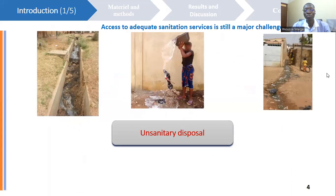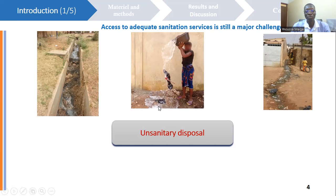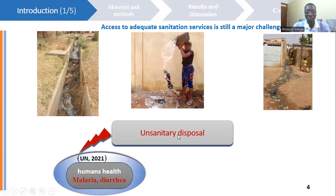As an introduction, in middle and low income countries, access to adequate sanitation services is still a major challenge, despite all the efforts made so far. Indeed, wastewater is most often discharged untreated onto the ground and into open stormwater drains, like we can see here. However, this unsanitary disposal is partly responsible for the transmission of disease, such as malaria and diarrhea.